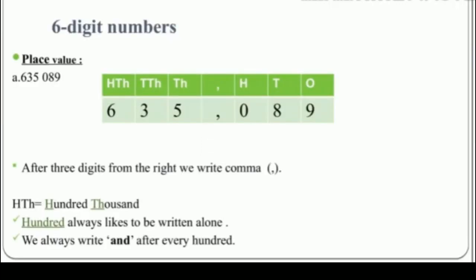Let's learn how to write a six-digit number. See the example: 635089. Notice how it is written — three digits 089 and then a space, then 635. This is the way you write a six-digit number: after three digits from the right-hand side, you give a little space and then write the remaining three digits.